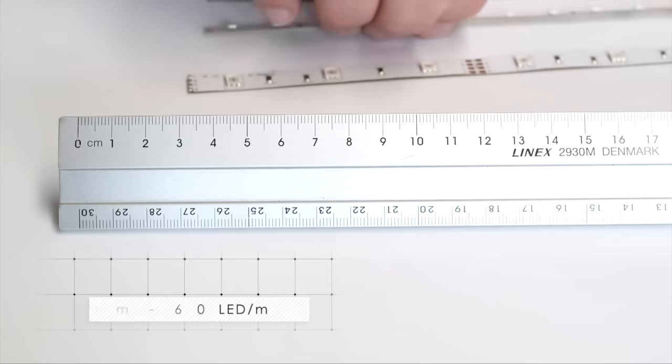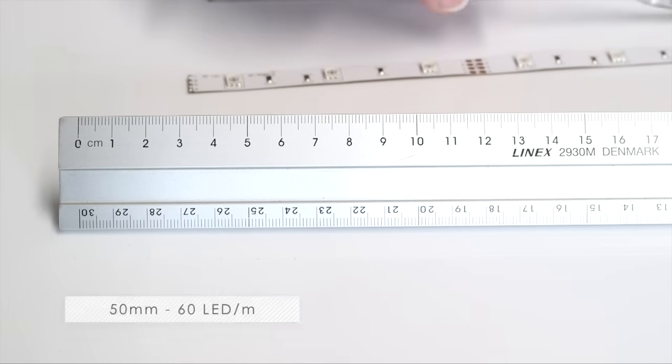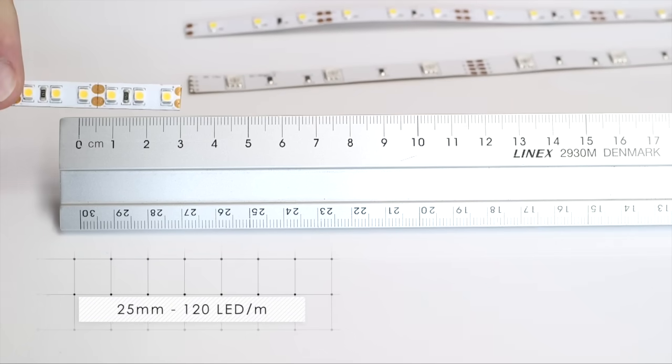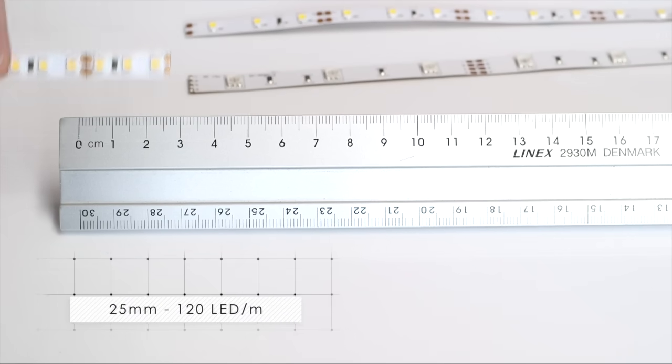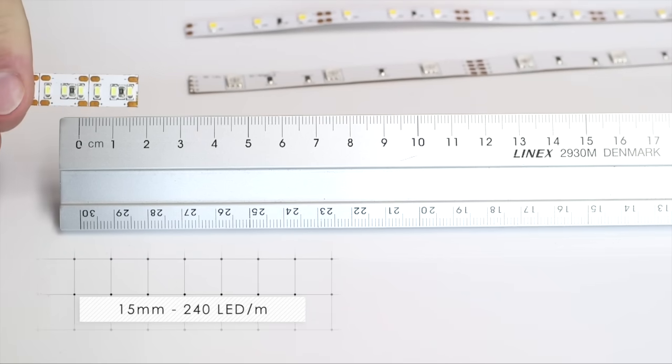50mm for strip with 60 LEDs per metre, 25mm for strips with 120 LEDs per metre, and 15mm for strips with 240 LEDs per metre.